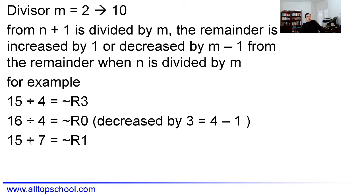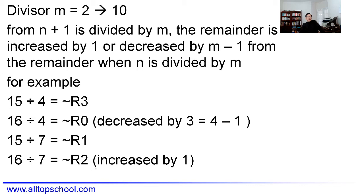Looking at the other case: 15 divided by 7 has remainder 1. If you increase 15 by 1 to get 16 divided by 7, the remainder becomes 2 — simply increased by 1. So there are only two possible remainder changes: increase by 1, or decrease by m−1 when the remainder reaches its maximum and the next value is a multiple of m.